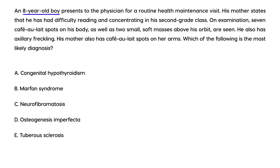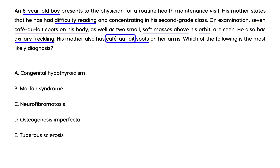Clinical vignette 1: An eight-year-old boy presents for a routine health maintenance visit. His mother states he has had difficulty reading and concentrating in second grade. Examination reveals seven café au lait spots on his body, two small soft masses above his orbit, axillary freckling, and his mother also has café au lait spots on her arms. The most likely diagnosis is neurofibromatosis, as the café au lait buzzword is characteristically associated with this condition.